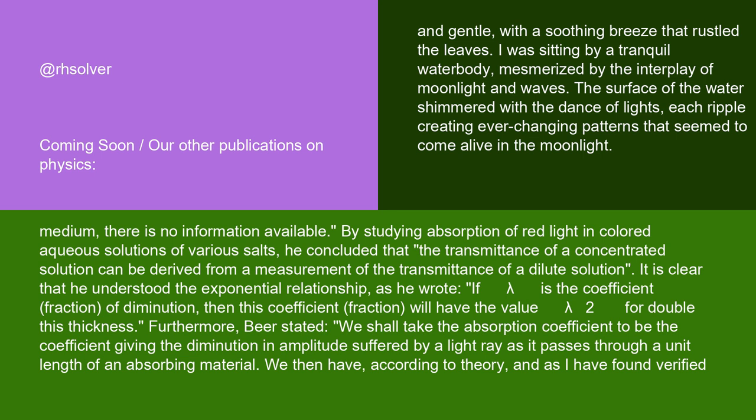By studying absorption of red light in colored aqueous solutions of various salts, he concluded that the transmittance of a concentrated solution can be derived from a measurement of the transmittance of a dilute solution. It is clear that he understood the exponential relationship, as he wrote: if λ is the coefficient fraction of diminution, then this coefficient fraction will have the value λ² for double this thickness. Furthermore, Beer stated: we shall take the absorption coefficient to be the coefficient giving the diminution in amplitude suffered by a light ray as it passes through a unit length of an absorbing material.